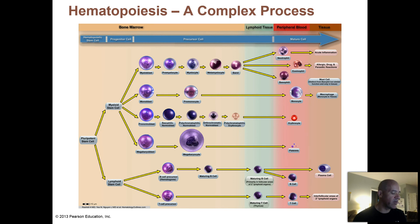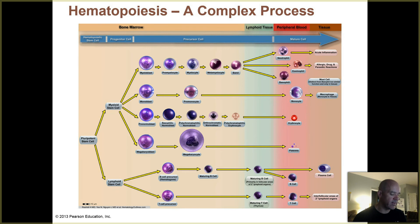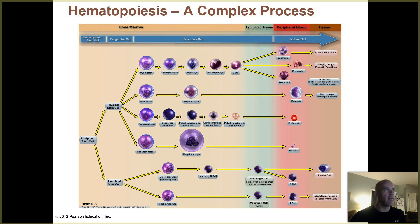This diagram is showing you that hematopoiesis is a pretty complex process. If you're having a momentary heart attack looking at this diagram, no — you don't have to learn everything here, but I do want you to be aware of the complexity of what's going on. You should be familiar with some of the terminology. Also note that this diagram is a little bit different from the one in your textbook — I thought this one was better — so some of the cell names along these pathways will be slightly different.